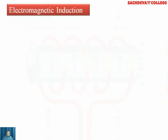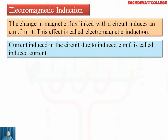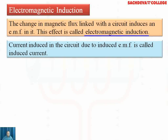Now, what is electromagnetic induction? Regarding electromagnetic induction, we consider a coil and bring a magnet nearby. We find that the galvanometer in that coil indicates some deflection. So electromagnetic induction is basically a phenomenon in which, due to change in flux, an induced current or induced electromotive force develops. The change in magnetic flux linked with the circuit induces an EMF in it — this effect is called electromagnetic induction.